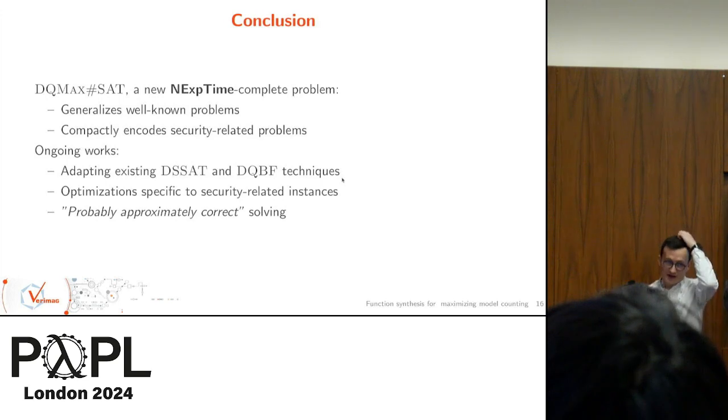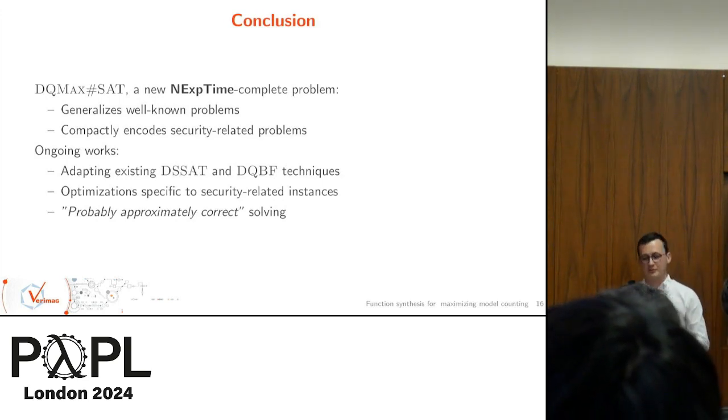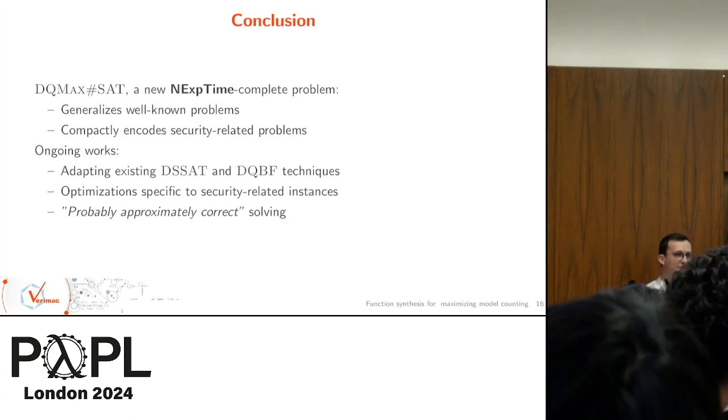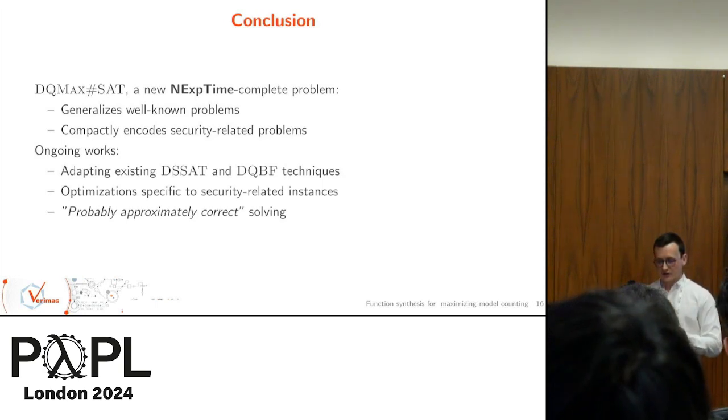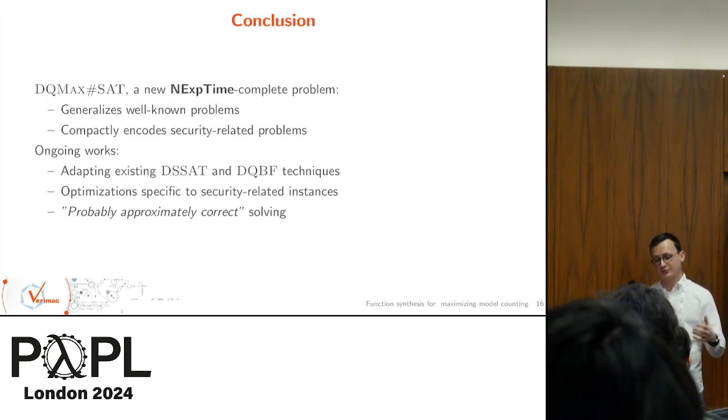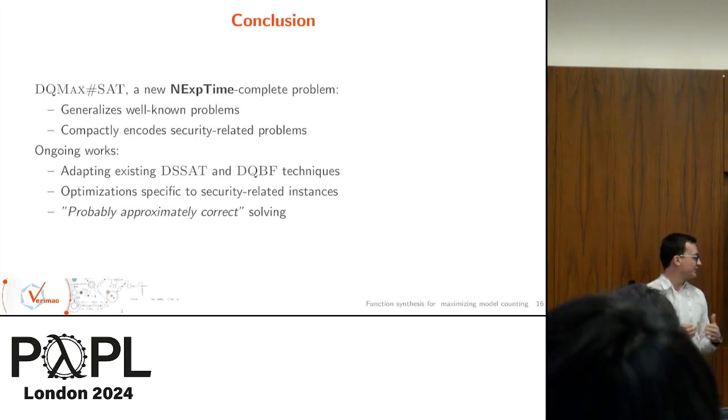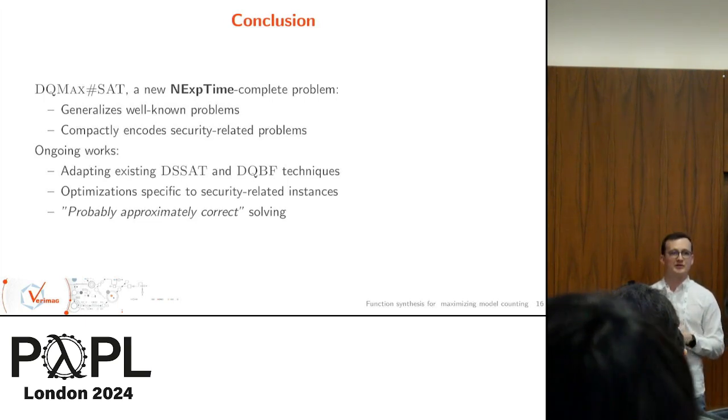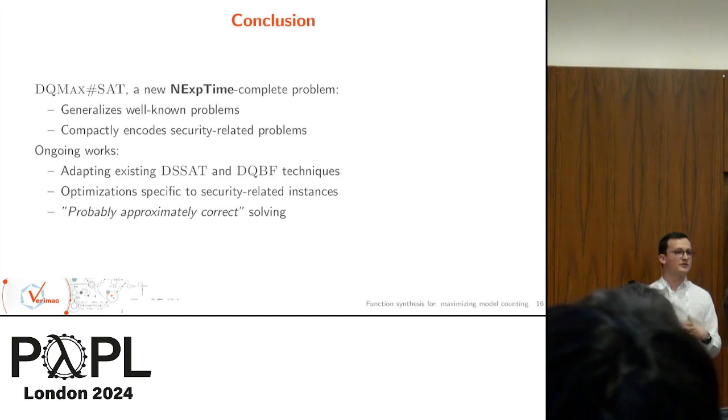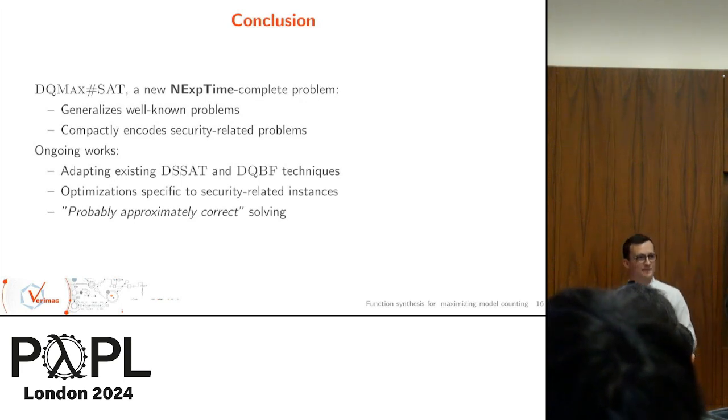As a conclusion, I've presented to you DQMaxSharpSat, which is a new NEXPTIME-complete problem. It generalizes well-known problems in the NEXPTIME-complete class. You have to trust me here, it compactly encodes security-related problems. The future works will mainly be trying to implement techniques that have been applied in DSSat and DQBF, especially dependency reductions. Using optimizations specific to security-related instances, because that's what we're interested in. And going deeper into probably approximately correct solving, which is basically lowering the guarantees that we give on the answer but just having some probabilistic guarantees over the optimal answer. And that's it for me. I will answer any questions.